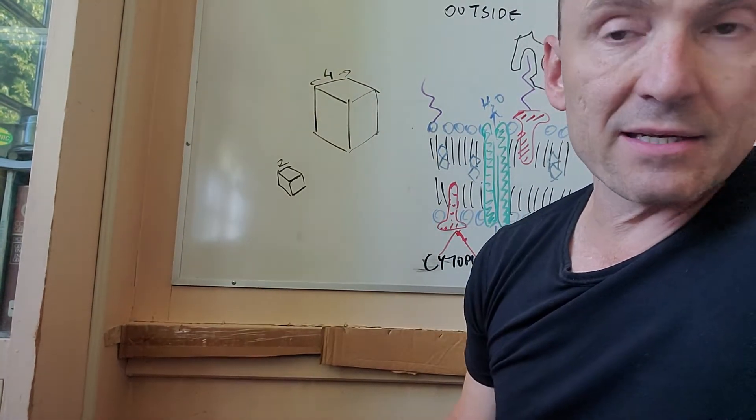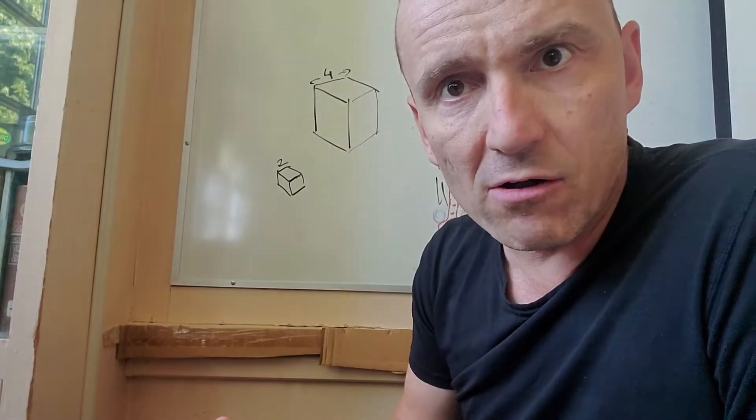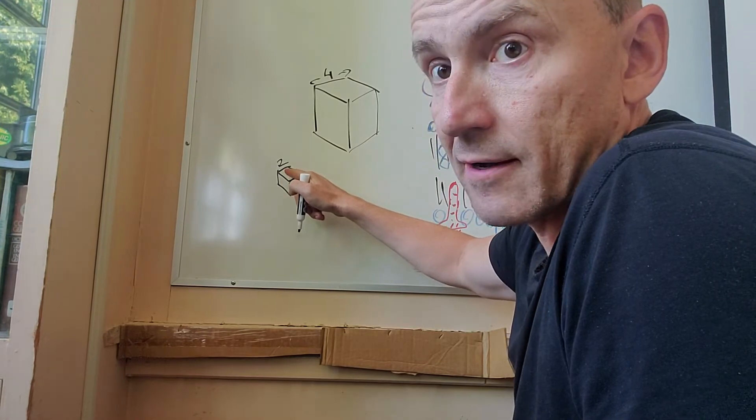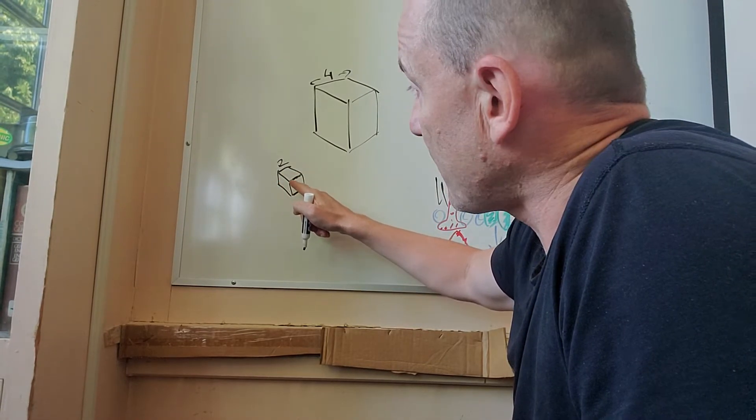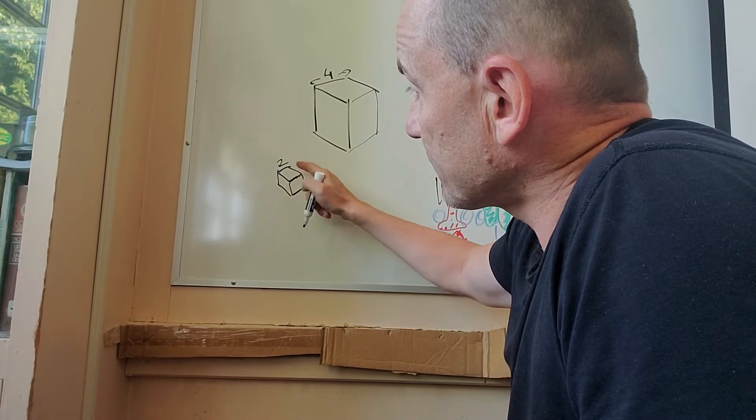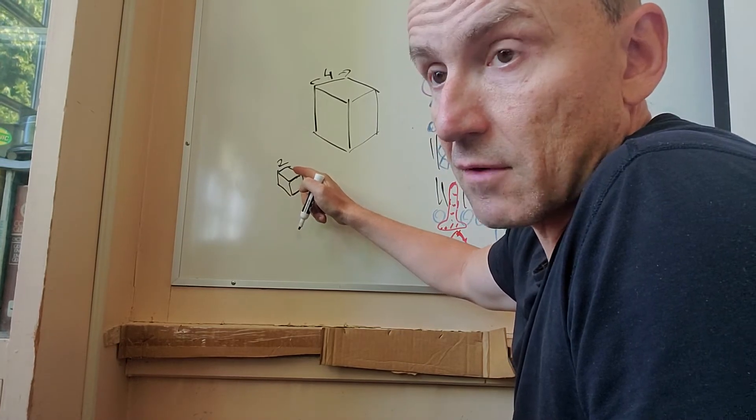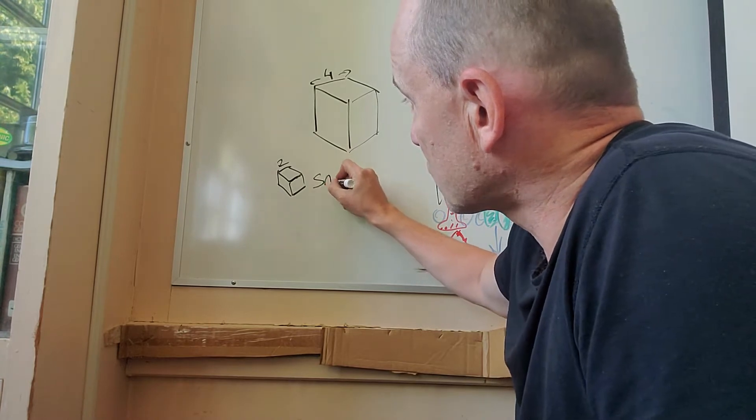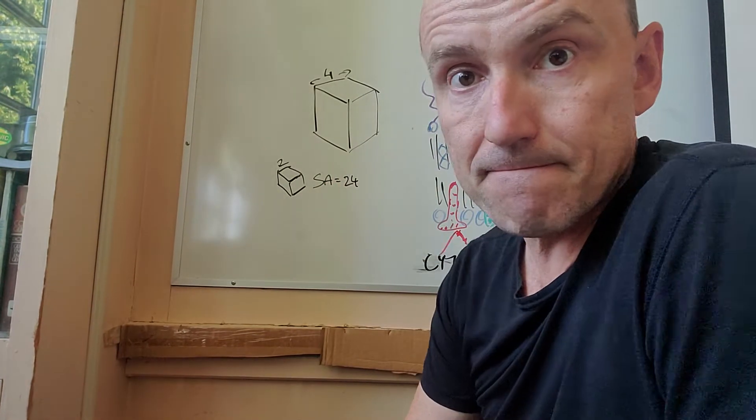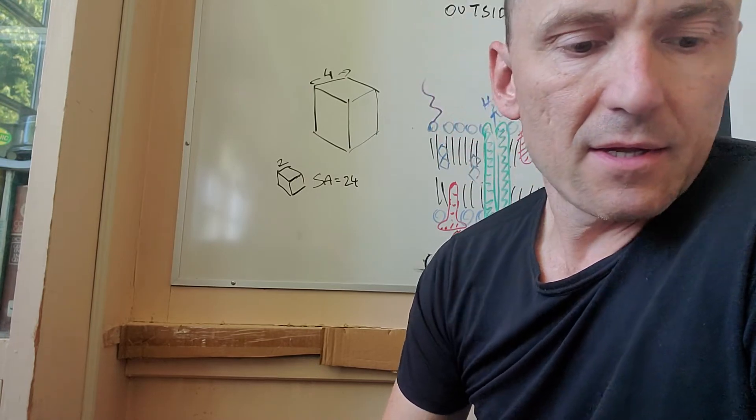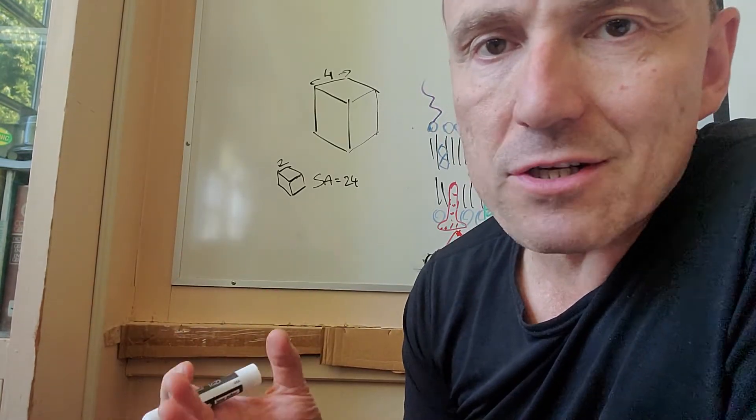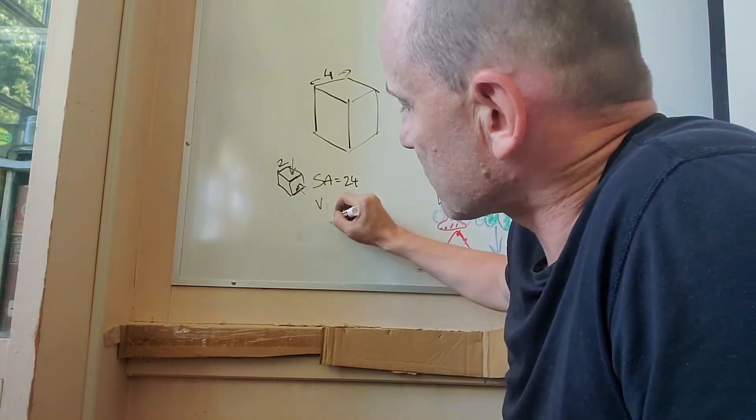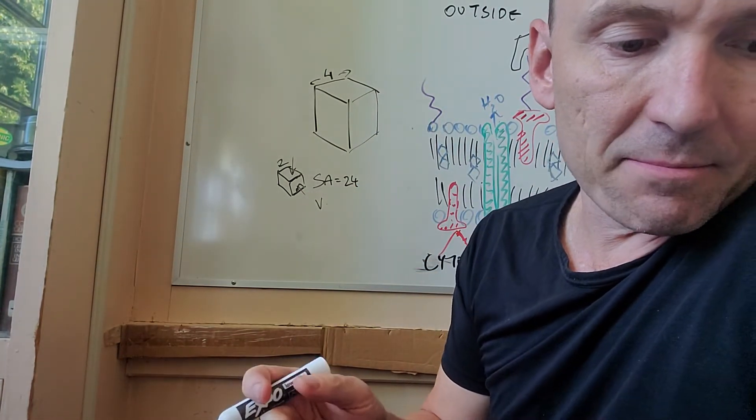So what's going to happen is the small cube, its surface area is two by two. So four, eight, twelve, sixteen, and then the back side. So the surface area ends up being 24. So there's basically 24 square units of things being able to enter and exit. The volume of this cube is going to be eight.